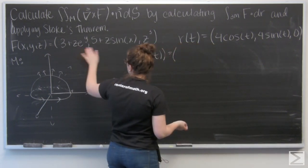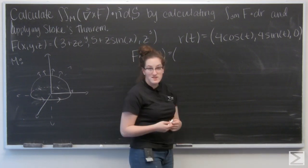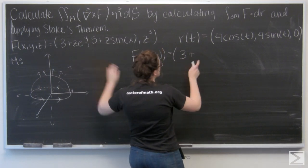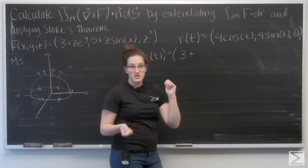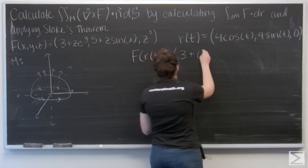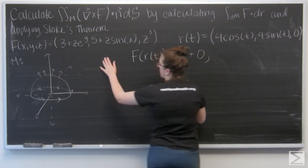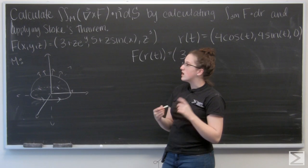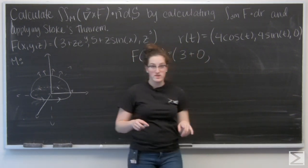So the first term I've got 3 plus Z e to the Y. So I have 3 plus, well Z is 0, so that second term is just going to be 0. And then I have 5 plus Z sine of X. Well, 5 is going to stay, but Z sine of X is going to go to 0.